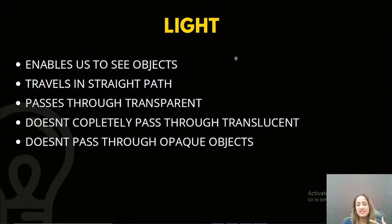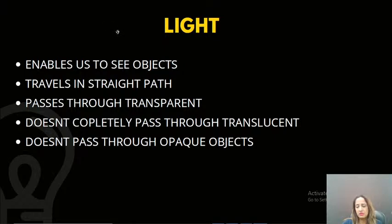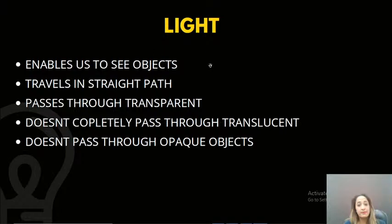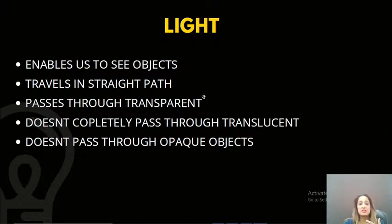Light is something which enables us to see objects. It always travels in straight paths — if you bring something in its way, it will stop or change its path. Light passes through transparent objects like glass, does not completely pass through translucent objects like oiled paper, and does not pass through opaque objects at all.